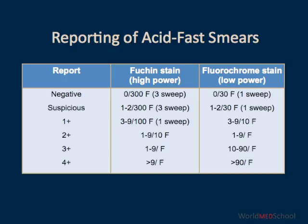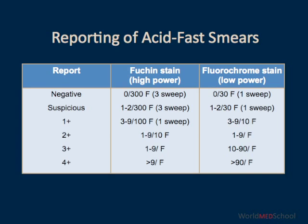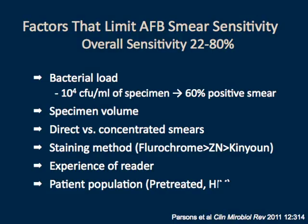Reporting of acid-fast smears is shown on this slide on the right for fluorochrome stains. No organism seen is reported as negative. 1 to 2 on the entire slide is reported as suspicious or indeterminate. 3 to 9 per 10 fields is reported as 1+, 1 to 9 per field as 2+, 10 to 90 per field as 3+, and greater than 90 per field as 4+. Overall, microscopy has a sensitivity of about 50%, so it misses half of the TB cases. The number one factor affecting sensitivity is the number of organisms per mil of sputum — you need at least 100,000 bacteria per mil to consistently detect organisms by microscopy.